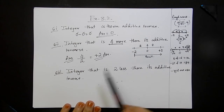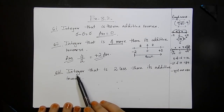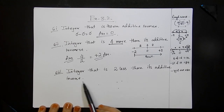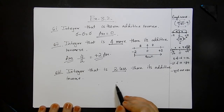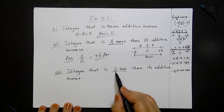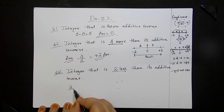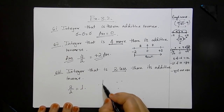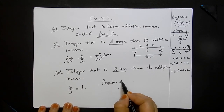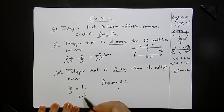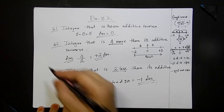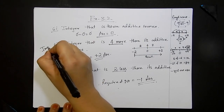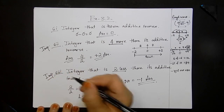Sub-part 3: an integer that is 2 less than its additive inverse. We need the smaller number. Divide by 2: 2 divided by 2 equals 1. The two numbers are 1 and minus 1. The smaller of the two is minus 1. So the required integer is minus 1. These are very important questions — go through them over and over again.